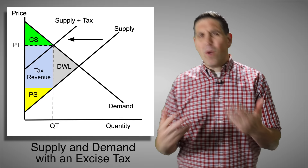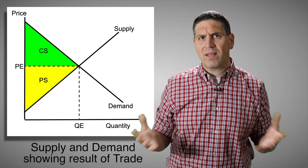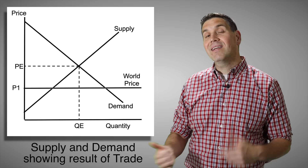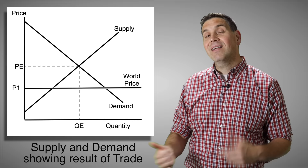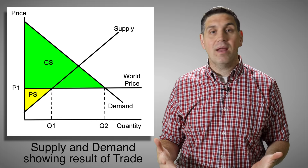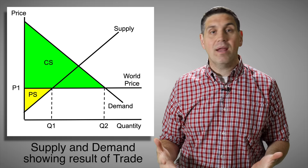The point is you see the same concepts — consumer surplus, producer surplus, and deadweight loss. We can take those concepts and show the results of international trade. If PE is the domestic price and P1 is the price we can get from other countries, that means consumer surplus is larger and producer surplus is smaller, but there's no deadweight loss. This explains why economists in general like international trade — it benefits consumers even though it's worse for domestic producers, but overall there's more total surplus.